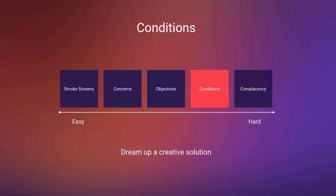Objection technique number four is conditions. These are not objections in the true sense of the word — they are problems that need to be solved, and many are potentially disqualifying. An example: you don't have an integration the buyer needs. You can't overcome that condition with an objection handling technique. You have to solve the problem by getting your engineering team to build the integration or come up with a creative solution. Another example: they don't have the immediate cash.